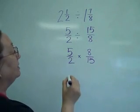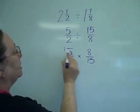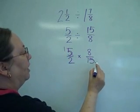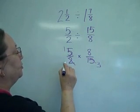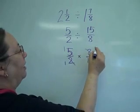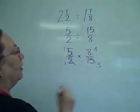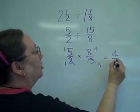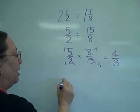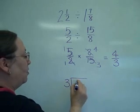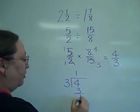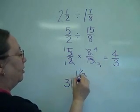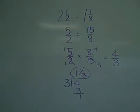I have a little bit of canceling I can do here. 5 goes into 5 once, 5 goes into 15 three times. A little bit more: 2 goes into 2 once, 2 goes into 8 four times. Multiplying the tops, multiplying the bottoms. So now I've got 3 goes into 4 one time with 1 left over to give me 1 and 1 third as my answer.